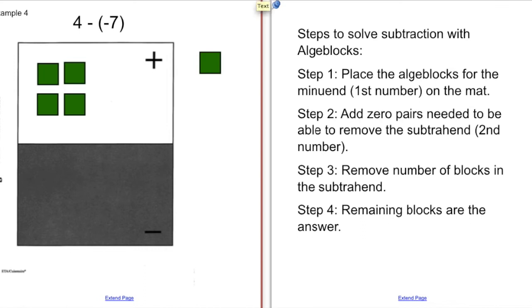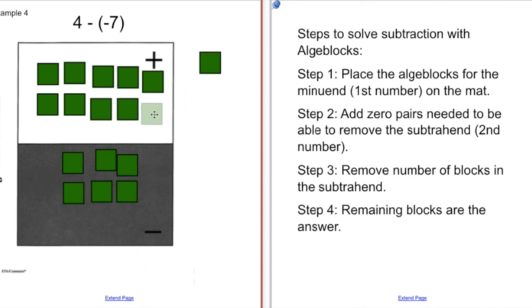Example 4 is 4 minus negative 7. So this time, I want to take away a negative amount. But again, there's not a negative. So we've got step 1, we've got the minuend here. Now I need to add zero pairs until I have enough to remove for the subtrahend. There's 2 zero pairs, 3 zero pairs. I still don't have negative 7 to take away. It's probably going to get a little crowded here: 4, 6, and 7. So now I have 1, 2, 3, 4, 5, 6, 7.